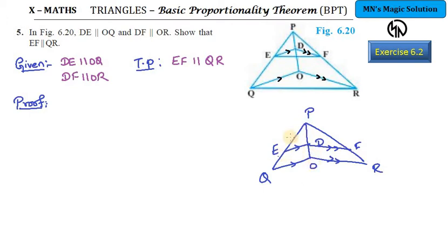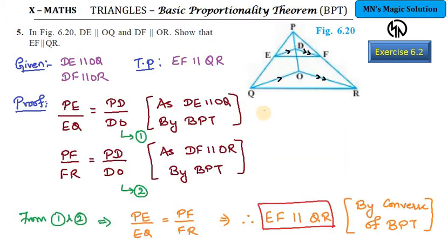From statements 1 and 2, you can bring it together. So here goes our proof with just two statements using BPT. You relate the common ratio and you will get PE by EQ equals PF by FR. From that, by converse of BPT, you can say that these two lines EF and QR are parallel to each other.